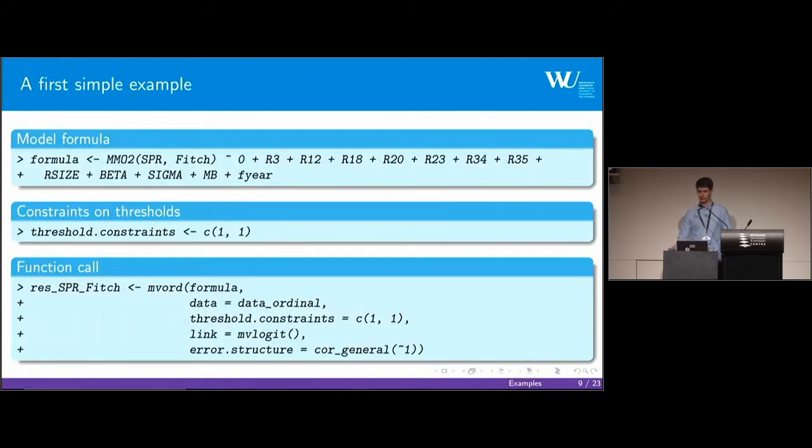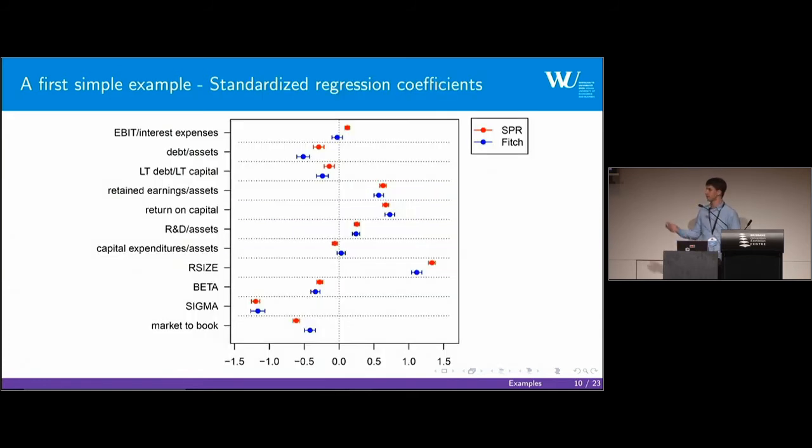If we start with a first simple example, on the left-hand side we have a formula object with a multiple measurement object because the data has a wide data format. So each rating is in one column of the data frame: SPR for Standard & Poor's and Fitch for Fitch ratings. On the right-hand side of the formula we have the covariates. In this simple model we want to set the thresholds equal for both Standard & Poor's and Fitch, and this is simply performed by a vector of c(1,1). Then we call our fitting function mvord. We need a formula and the data set, data_ordinal. As threshold constraints we set them equal. As a link we choose the multivariate logit link, and as an error structure we choose the general correlation structure.